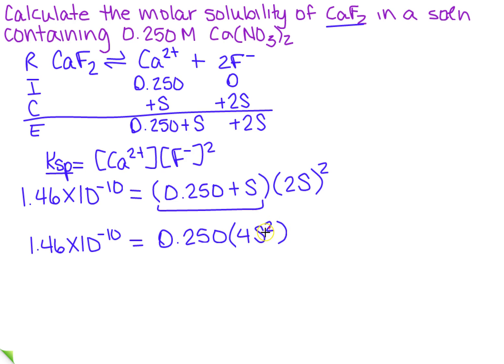So now I just need to solve for S. I'm going to multiply through, divide, and take the square root, and when I do that, I got 1.1832 times 10 to the minus 5th.